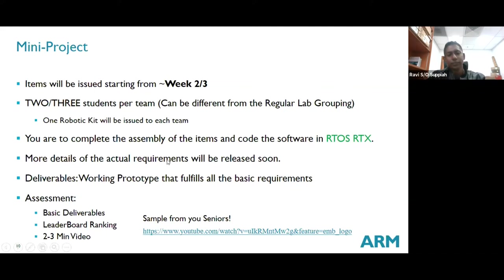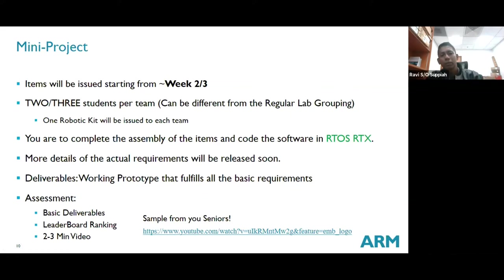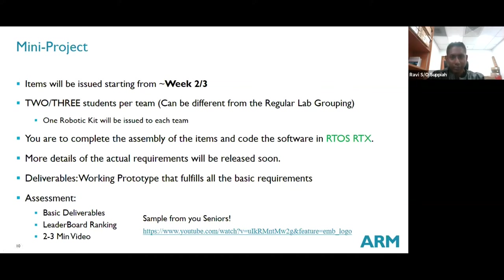As a motivational reward for the leaderboard ranking, the top group in the mini project assessment — every member in that team — will get their own individual robotic kit as a present. Whether there are two or three members in the team, everybody gets their own kit. I won't be able to give an additional Freedom board, but I'll give an Arduino Uno board. If you want the Freedom board you can get it on your own and build your own robot.